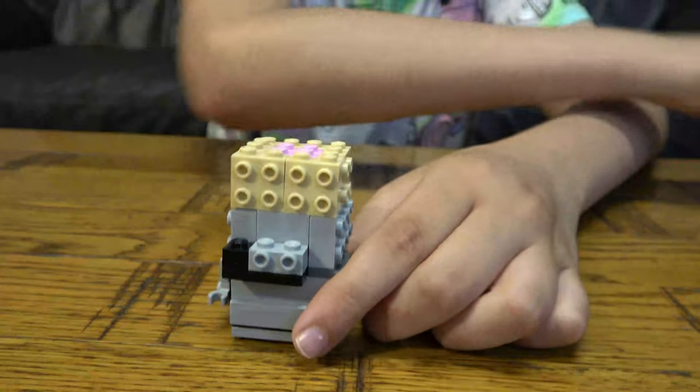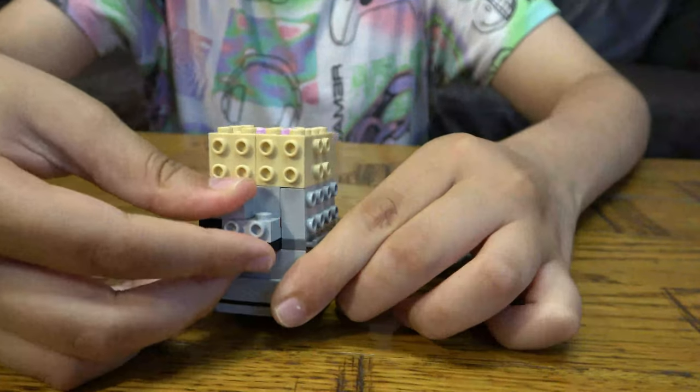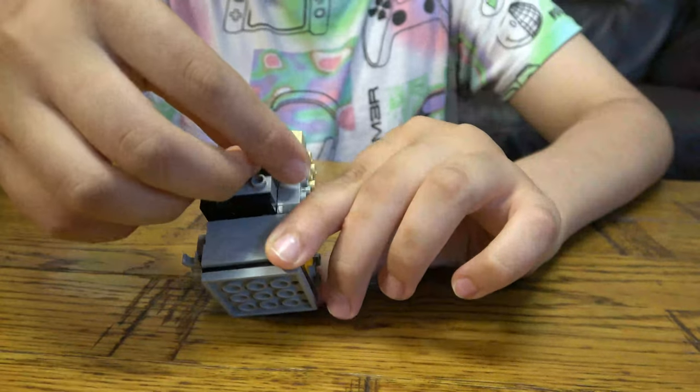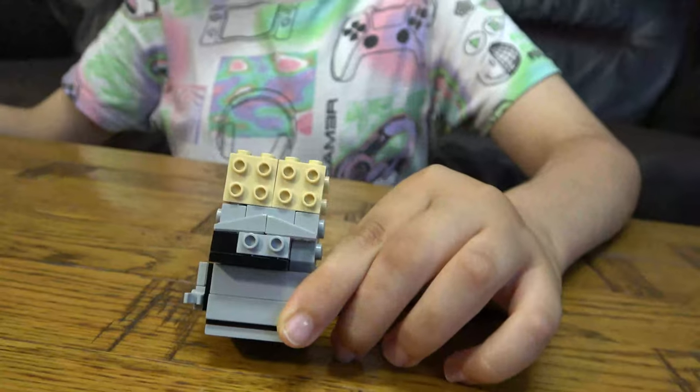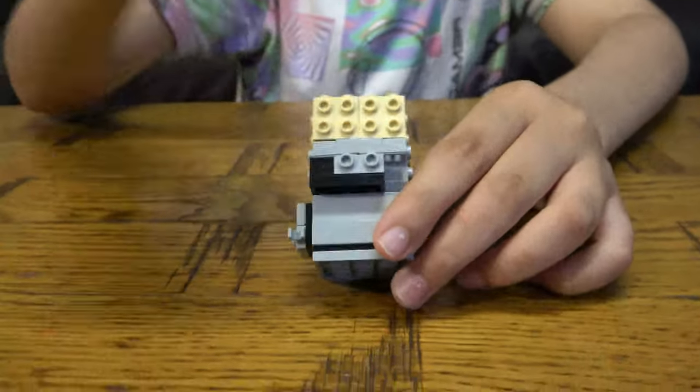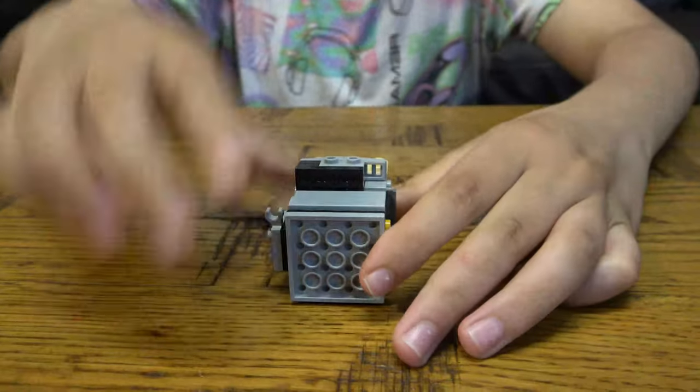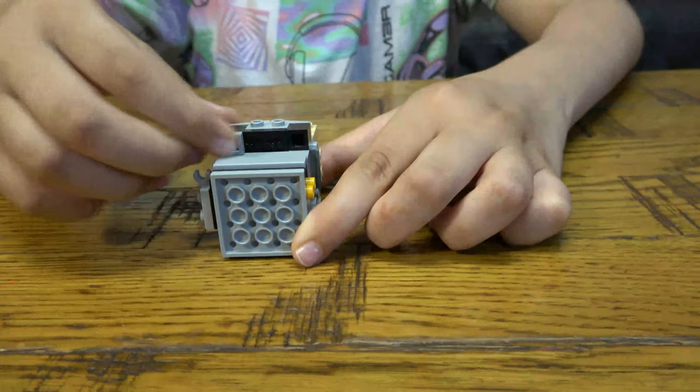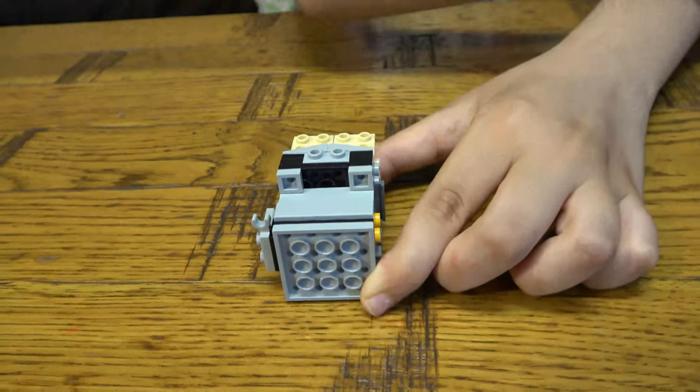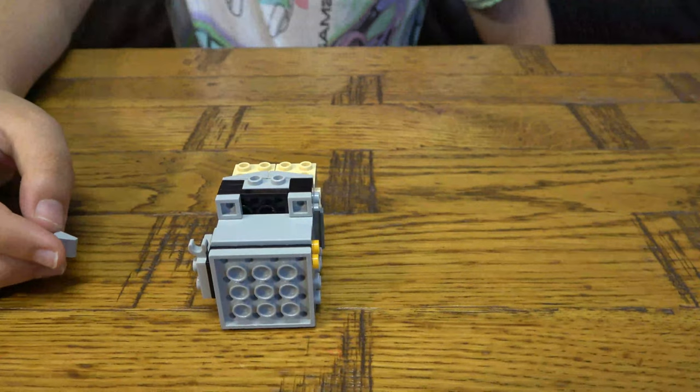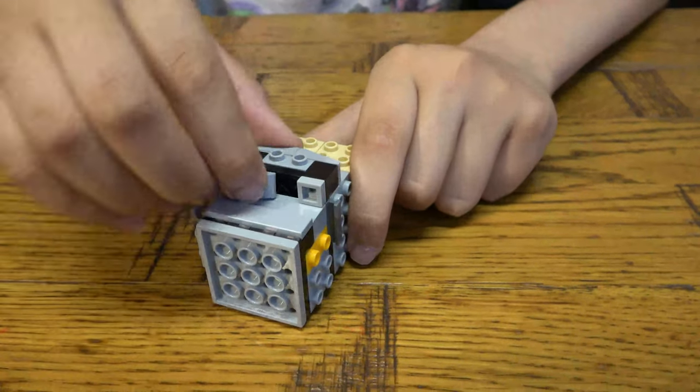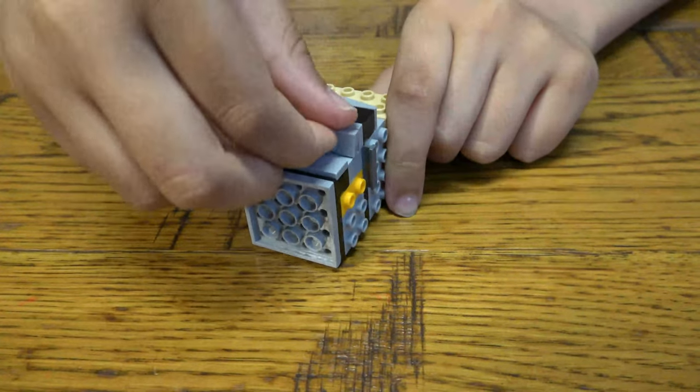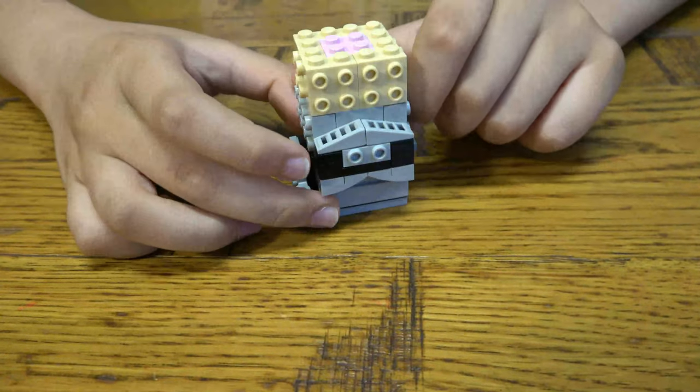And next we're going to get some gray pieces, like that, and then you're going to turn it upside down like that. Sorry guys I just sneezed. Let's continue. So this is like the front of the Captain Phasma's helmet, so yeah. There we go like that.